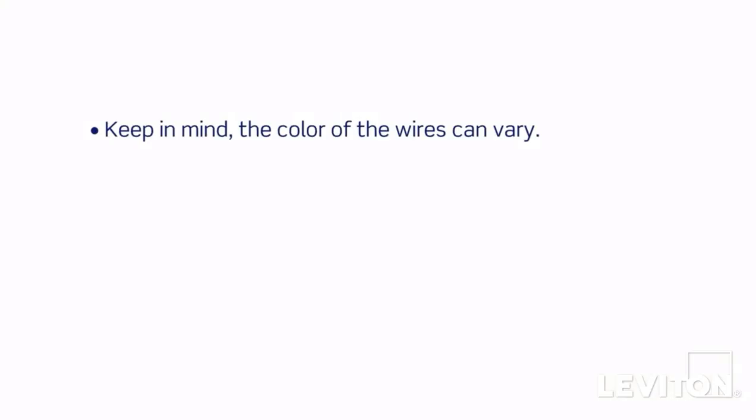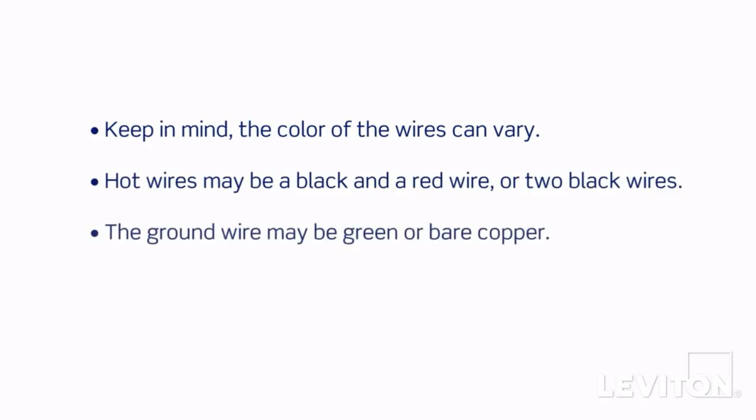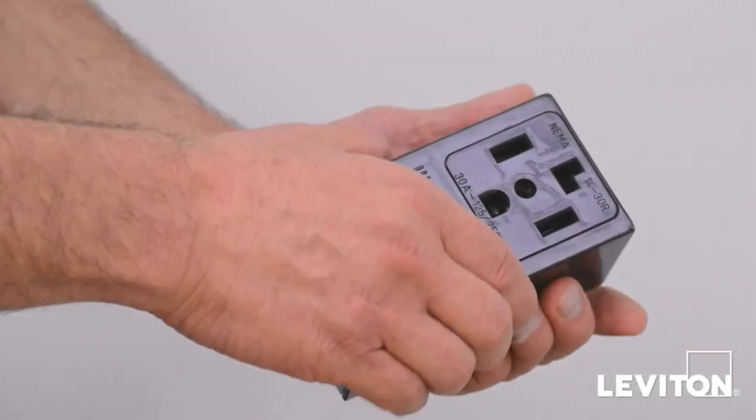Note, keep in mind, the color of the wires can vary. The hot wires may be a black and a red wire or two black wires. The ground wire could be green or bare copper. If you're unsure, contact an electrician.